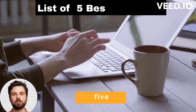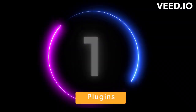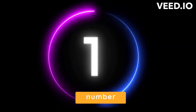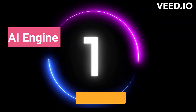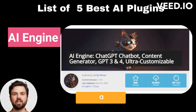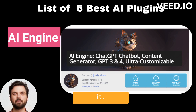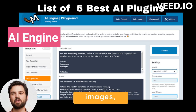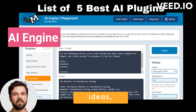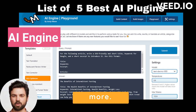List of 5 Best AI ChatGPT Plugins. Number 1: AI Engine. AI Engine enables you to create a ChatGPT-like chatbot and set behaviors for it. You can use the plugin to generate content and images, explore titles and ideas, fill out WooCommerce product fields, and more.